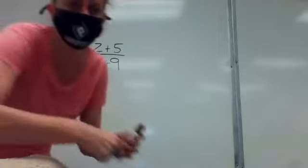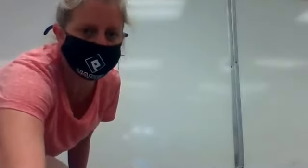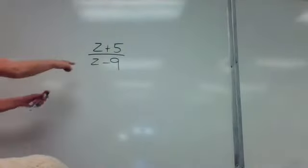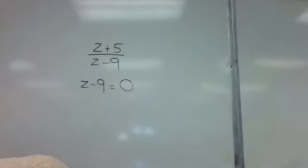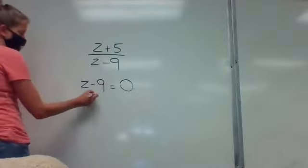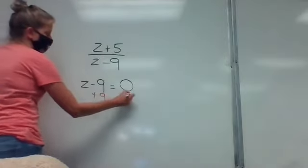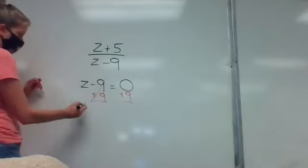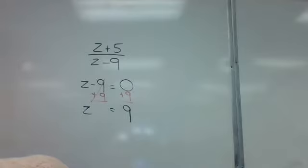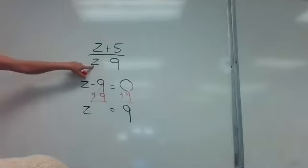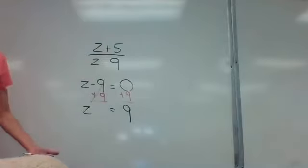For number 5, the denominator is z minus 9. Setting z minus 9 equal to zero and solving: z equals 9. If you put a 9 in that z spot, the denominator becomes 9 minus 9, which is zero — undefined. So nine is what would make that one undefined.